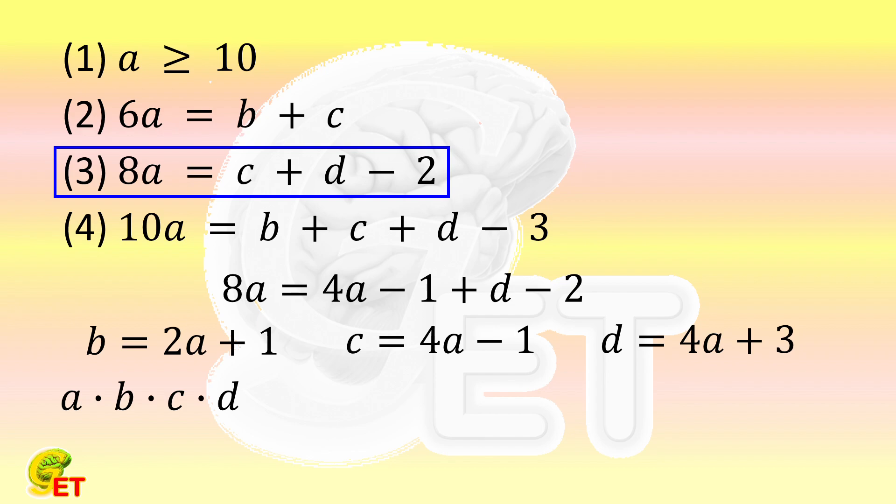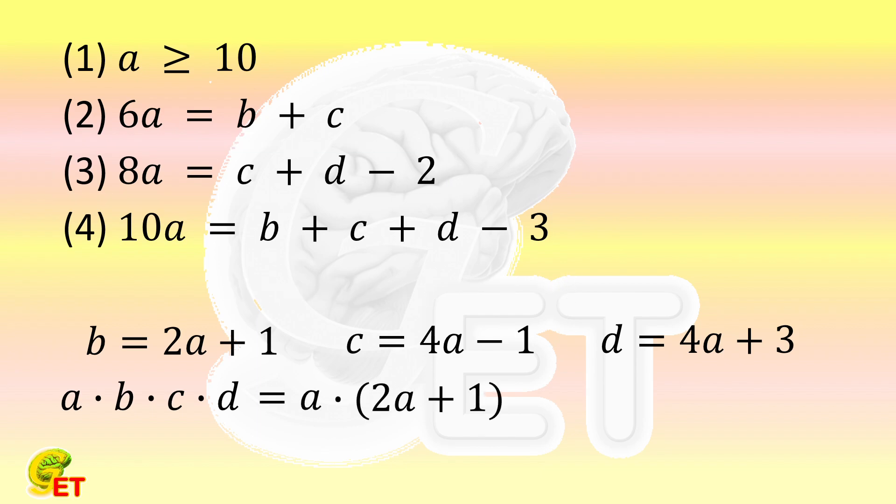So the product of A times B times C times D is equal to A, multiplied by twice A plus 1, multiplied by 4 times A minus 1, and multiplied by 4 times A plus 3.